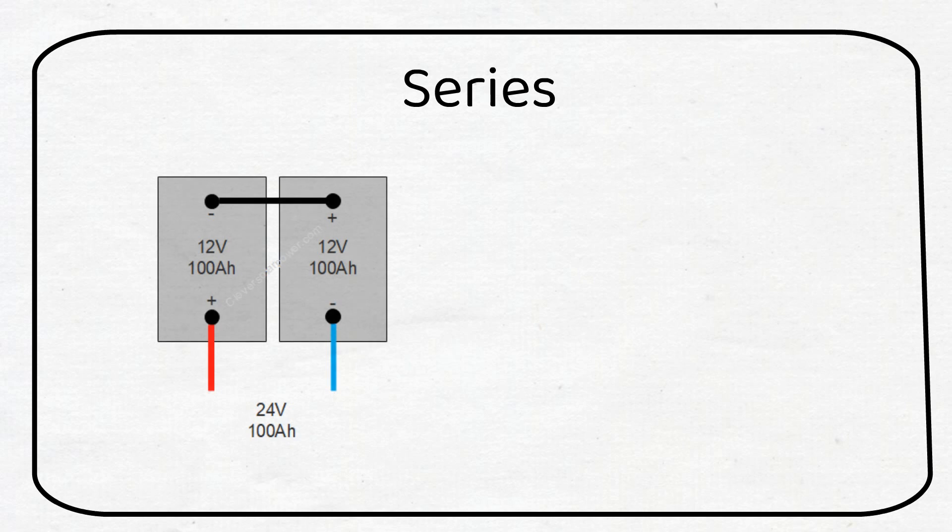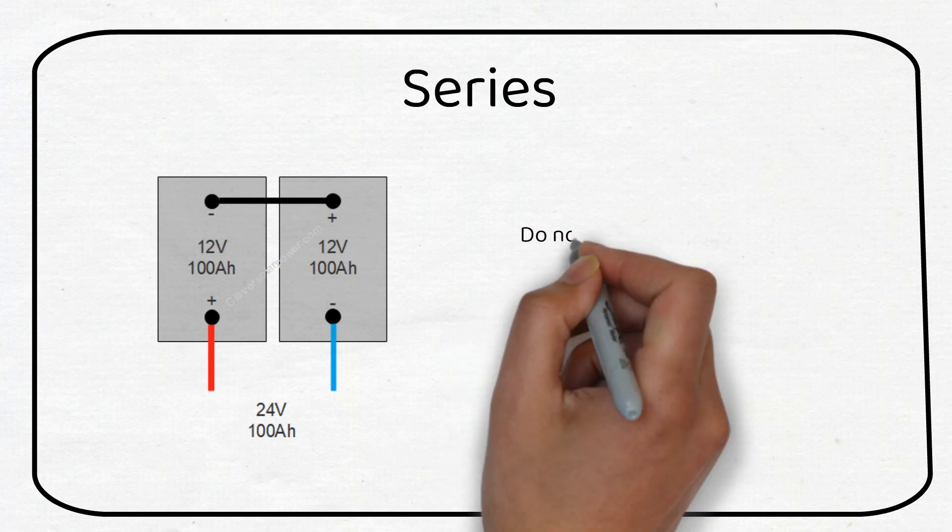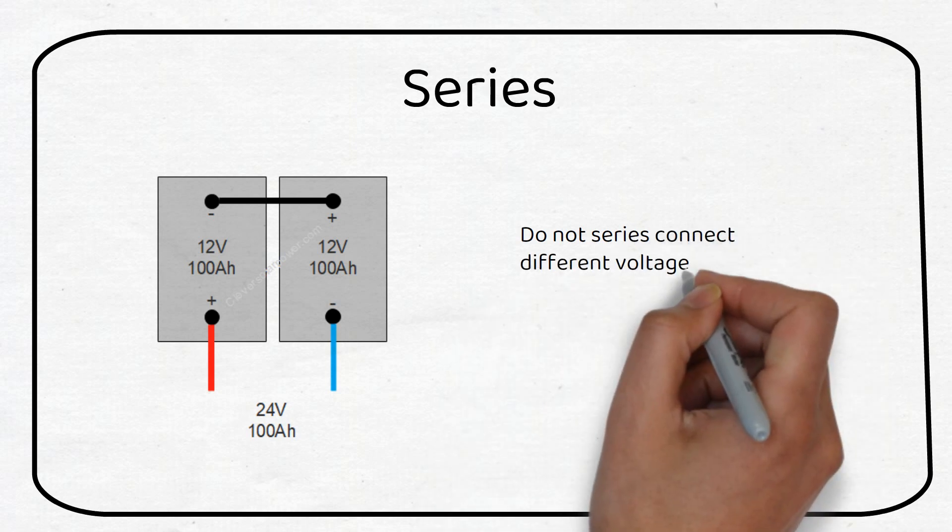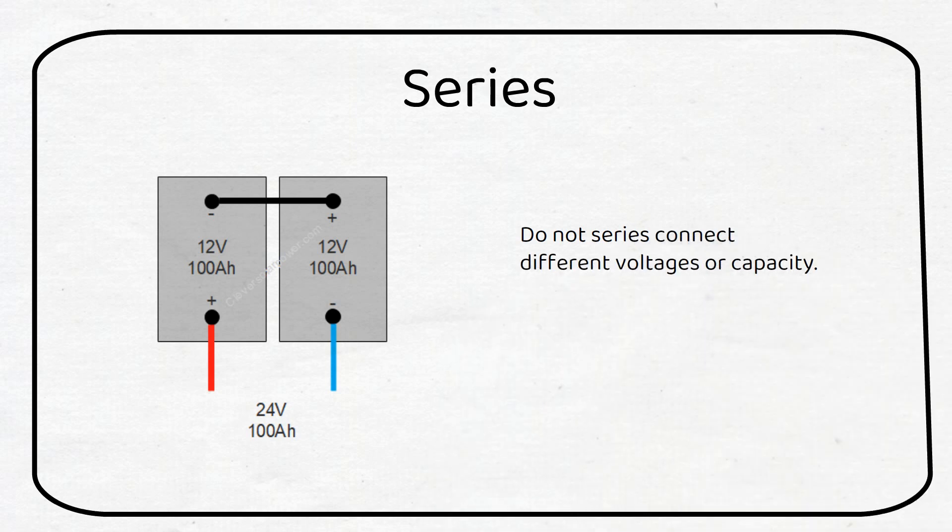If we wire in series the voltage gets added up while the capacity stays the same. Take these 12 volt batteries for example. If we wire them in series we will have a 24 volt 100 amp hour battery. Do not series connect different voltage or capacity batteries.